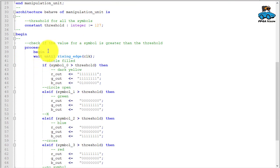And according to the value of the symbols, we check if the symbols are larger than a threshold. Threshold is a value. We have 8 bit values here, so 0 to 255. The threshold is 127. If symbol 0 is larger than the threshold, we detected a filled circle, a dot. And we indicate this by dark yellow. So we set red, green, blue to these values.